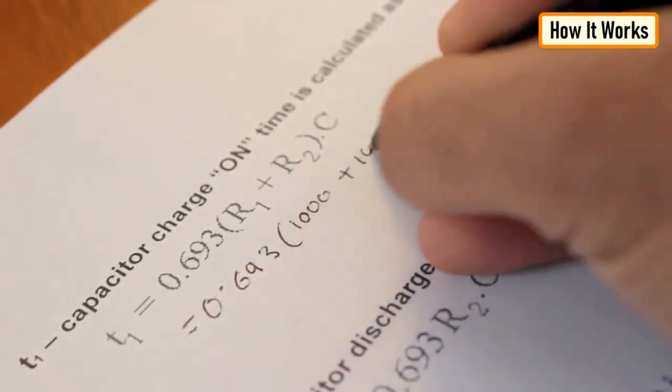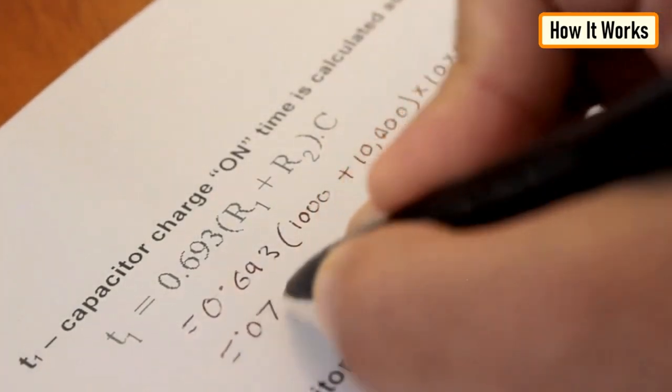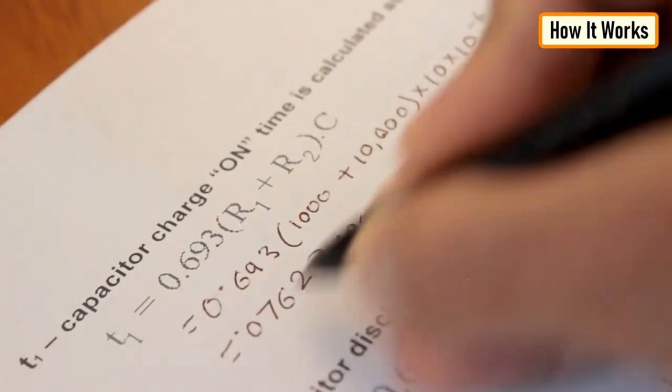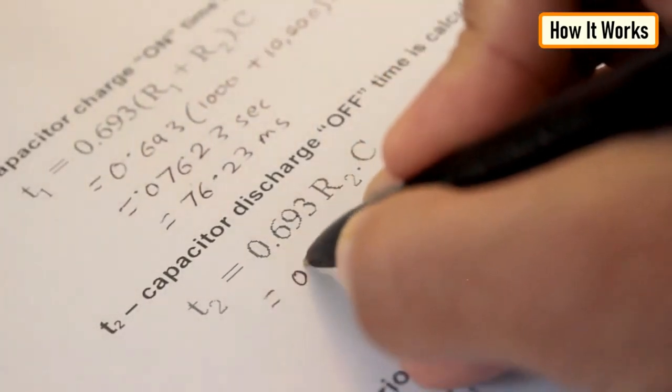Let's first calculate the value of T1 or the capacitor charge on time which is 0.693 times R1 plus R2 into C3. Putting the values together, we get 76.23 milliseconds.